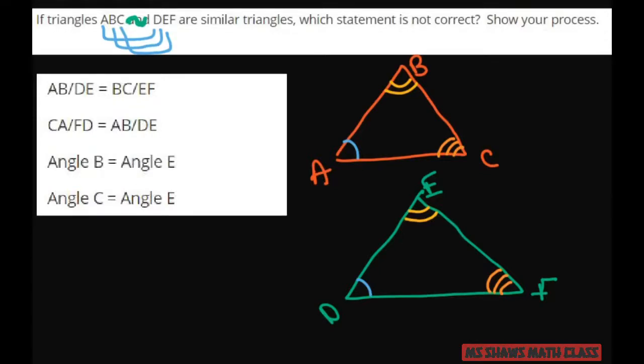It also means the sides have to be proportional. So AB to DE as BC to EF. That's the first one. So we have the sides kind of matching up. AB to DE as BC to EF. So that would be true.